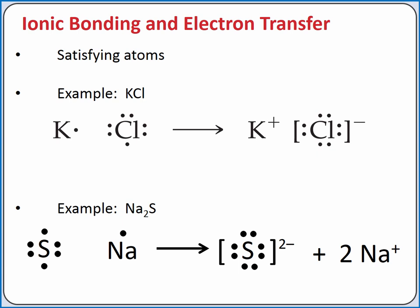Or we can look at the formula unit for the ionic compound produced between sodium and sulfur. Sodium has one valence electron it has to give away, but sulfur wants two additional valence electrons to satisfy the octet rule. So we need two sodium atoms for every one sulfur atom. Thus, sodium sulfide is Na2S.